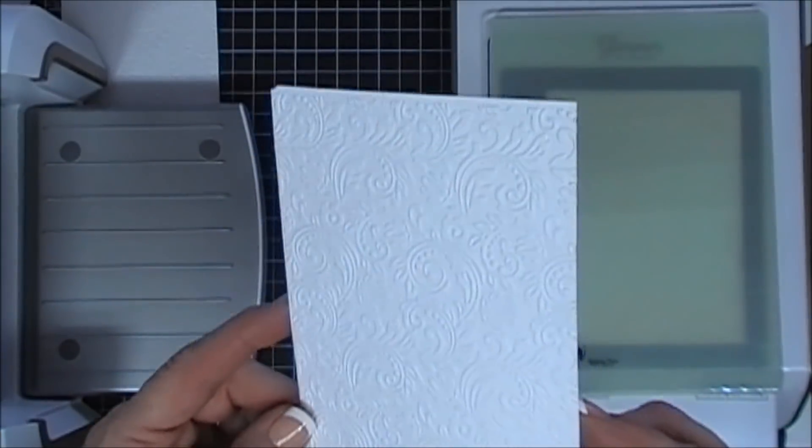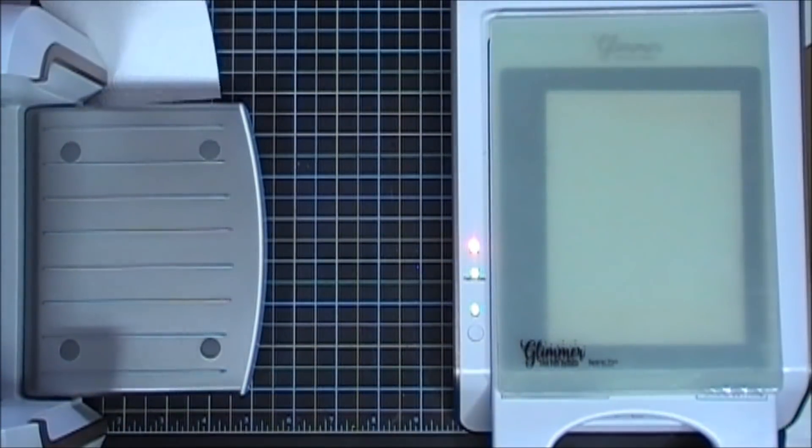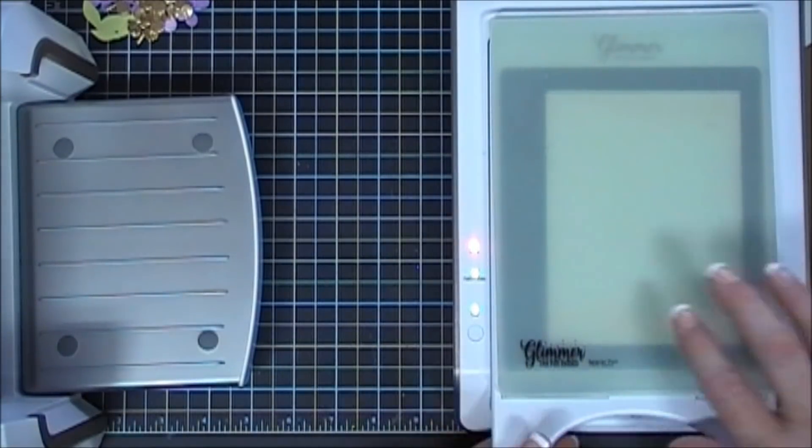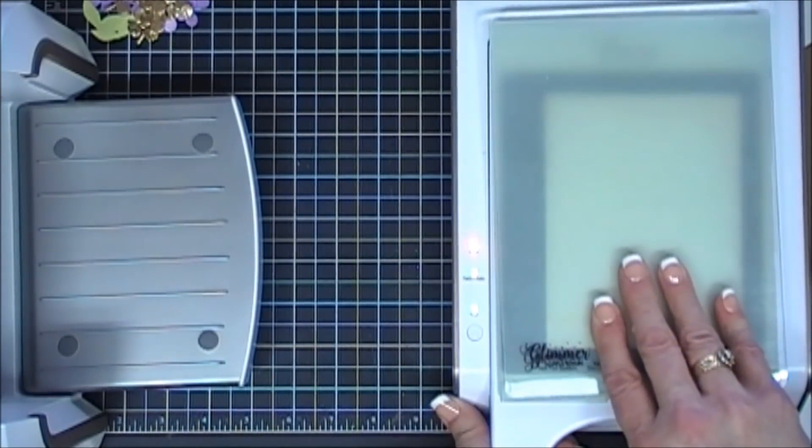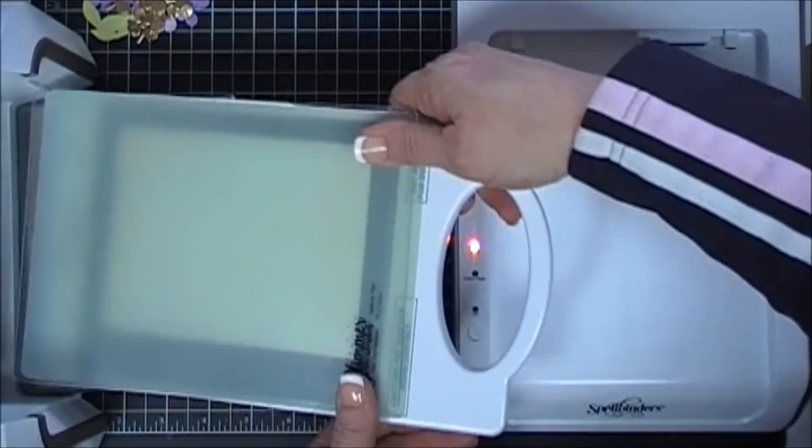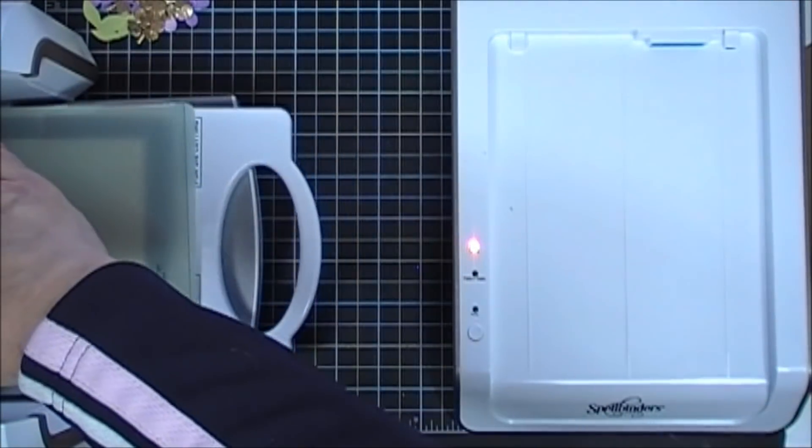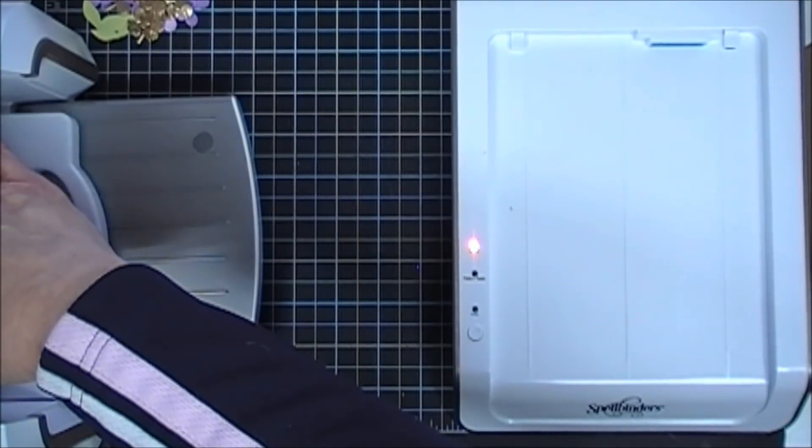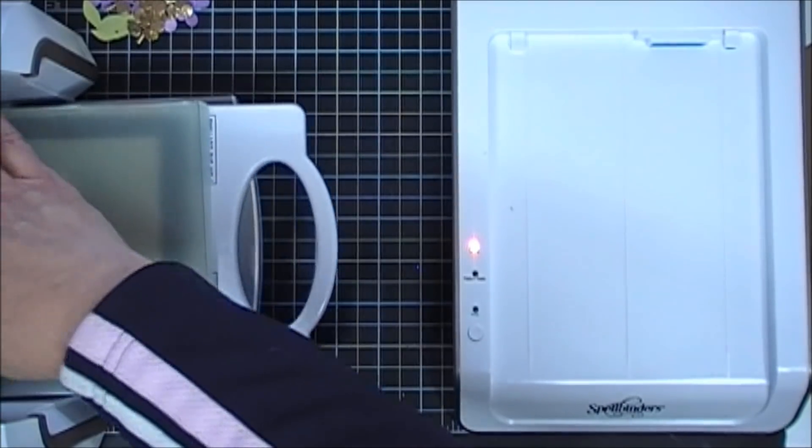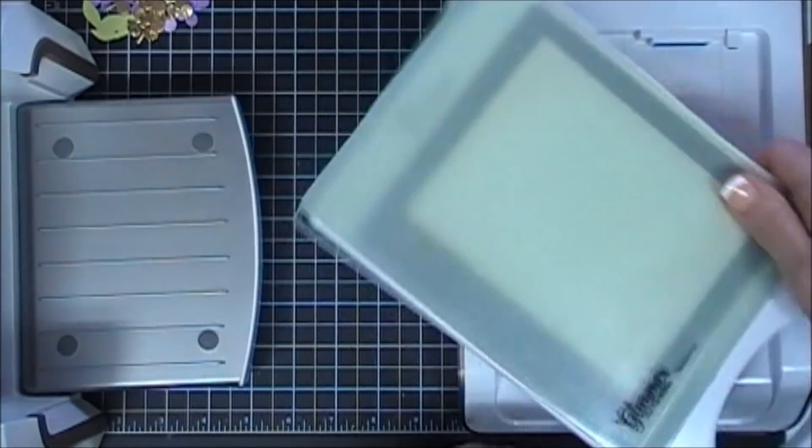So there's our embossed panel, super pretty. And our lights stopped flashing, so we're ready to disconnect from the docking station. When you disconnect, you want to be careful not to shift your paper or your foil, because if you do this you're going to get excess foil around your sentiment.